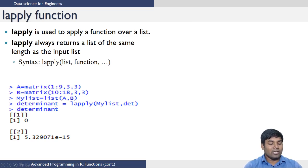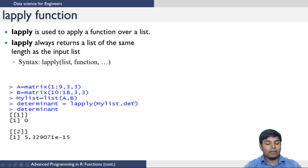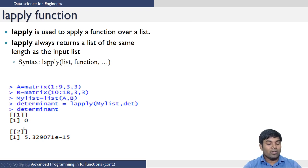Name the variable determinants, then use the lapply function and apply the det function on the list. When you do that, it calculates the determinant of A and stores it in element 1, then calculates the determinant of B and stores it in element 2 of the returned list.